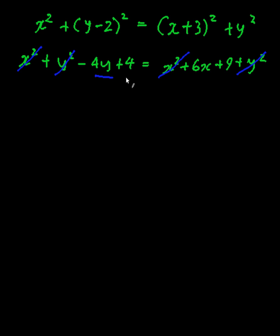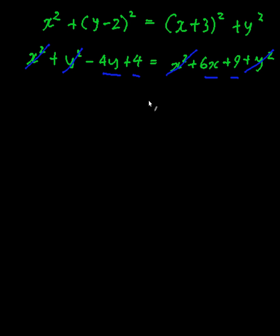So in the end, these are the only terms that I have. Okay, so I'm going to take everything on to one side, so it will become 6x plus 4y plus 5 is equal to 0. Okay, so this is my final equation of the line.